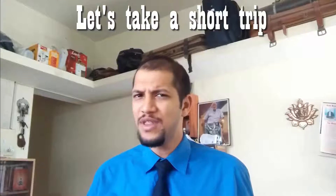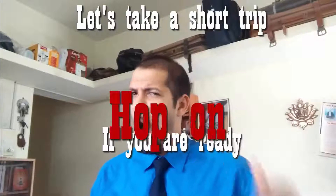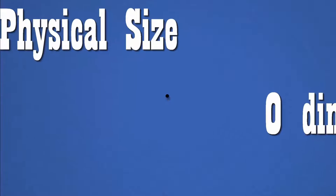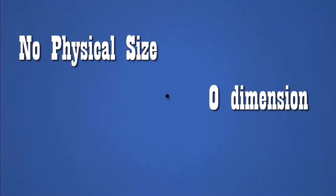So if you are ready for this, hop on! We start with a point. A point has no physical size. Therefore, it represents the zeroth dimension. So even if you zoomed in or zoomed out, a point would look the same — a point.